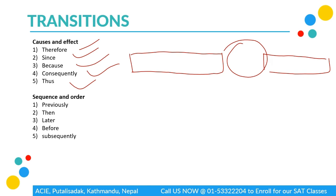Make sure you know the relationship between sentences before choosing a transitional word. For sequence and order, to show that data or events follow a time order, we can use words like previously, then, later, before, and subsequently. For example: 'I went to office today. Subsequently, I had gone out with my family this morning to buy some things.'